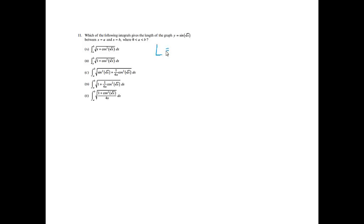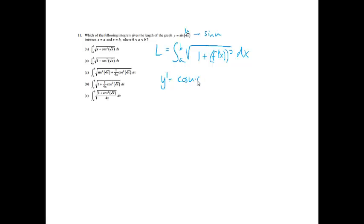Number 11: which integral gives the length of the graph y = sin(√x) between x = a and x = b? The arc length formula is the integral from a to b of √(1 + (y')²) dx. I need to find y prime. Using the chain rule with u = √x: the derivative of sin(u) is cos(u)·du. So y' = cos(√x) times the derivative of √x, which is 1 over 2√x. Therefore y' = cos(√x) / (2√x).